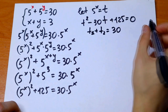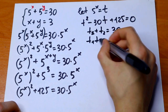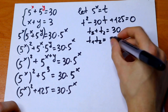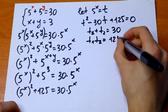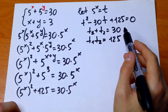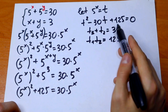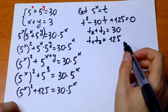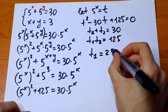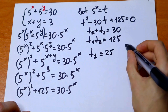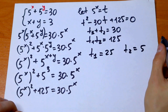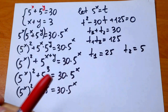Using Vieta's formulas, t1 plus t2 equals 30 and t1 times t2 equals 125. Solving, we find t1 equals 25 and t2 equals 5 — two roots.